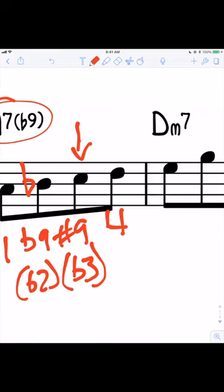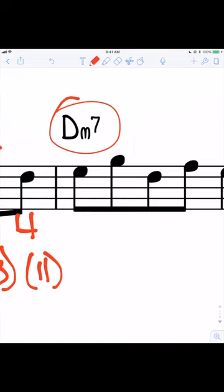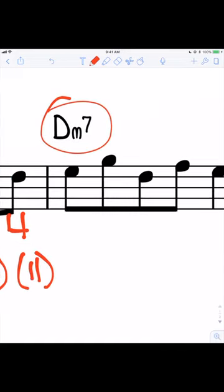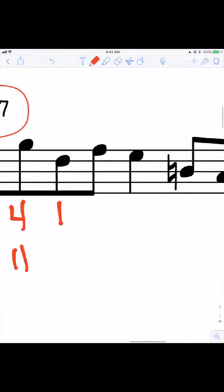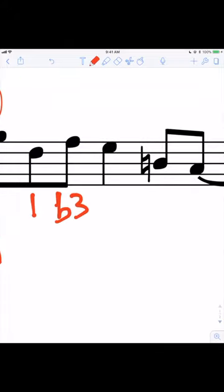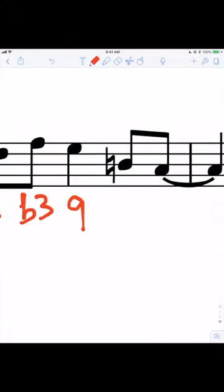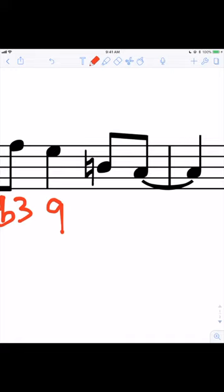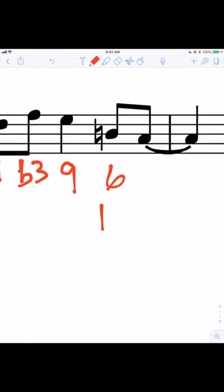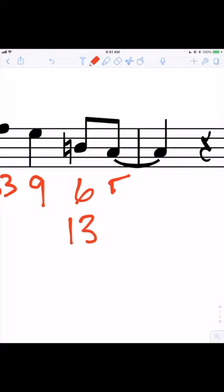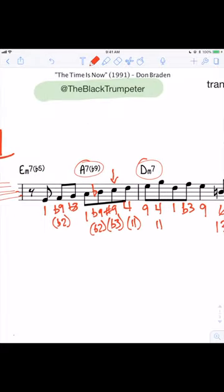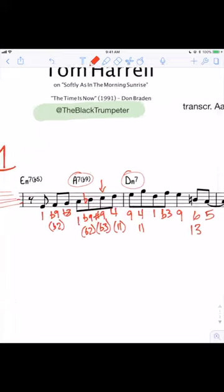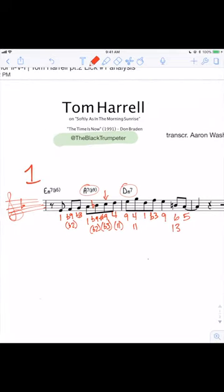Now next we're in D minor seven land. E is nine, G is four or eleven, D is of course one, F natural is our flat three, E is nine, and then he plays us a natural six, or we can call that a 13. And then last we have A, which is our fifth. So this is our very specific analysis using scale degrees.